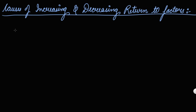In this video, we will be studying about the causes of increasing and decreasing return to a factor. We have discussed earlier that your total product keeps on increasing, first at the increasing rate, then at the decreasing rate, and then it starts decreasing. So what are the causes that affect the increasing and decreasing of returns to a factor?